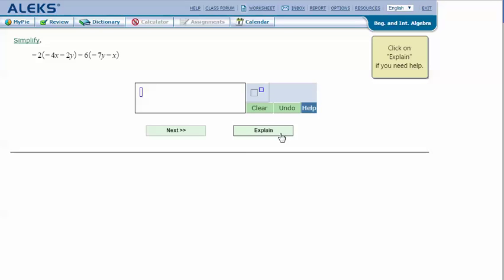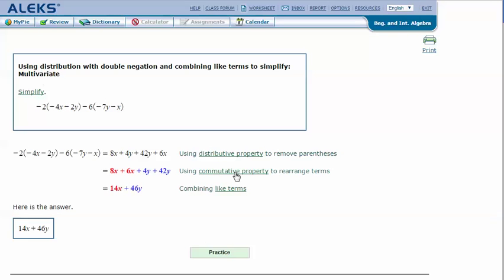Let's click explain. First we use the distributive property to remove the parentheses. Negative 2 times negative 4x is positive 8x, and negative 2 times negative 2y is positive 4y, so we have 8x plus 4y. And then over here, negative 6 times negative 7y is positive 42y, so plus 42y.